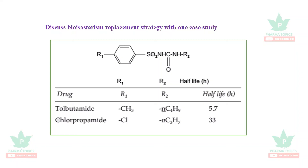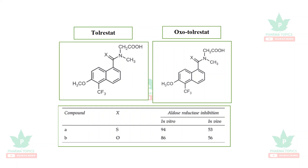Case study 1: Tolbutamide (R1 group) has a biological half-life of 5.7 hours. When the CH3 group is replaced by Cl via classical bioisosterism, the resulting drug is chlorpropamide, which has a drastically increased half-life and is a long-acting drug. This is a classical example of bioisosterism. Case study 2: Replacing sulfur with oxygen (C=S to C=O) in a compound results in in vitro and in vivo activity changes, used as an aldose-reductase inhibitor example.